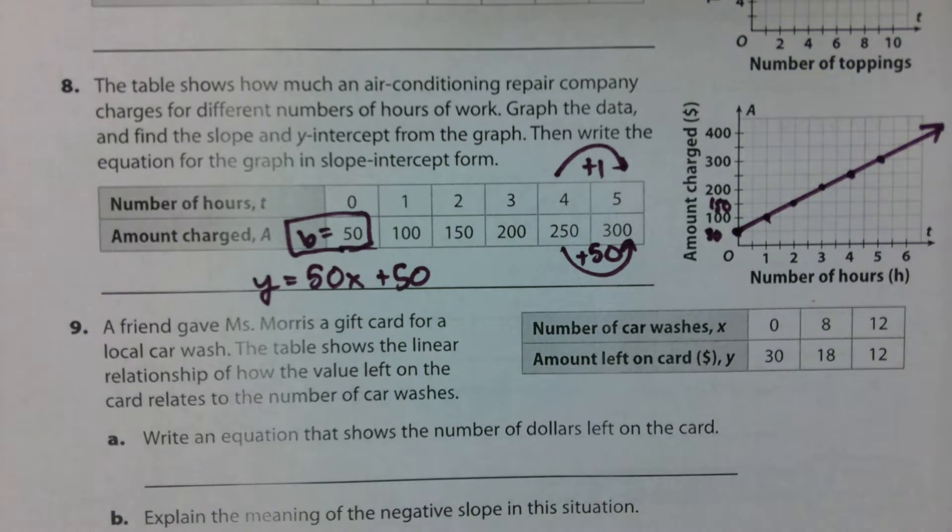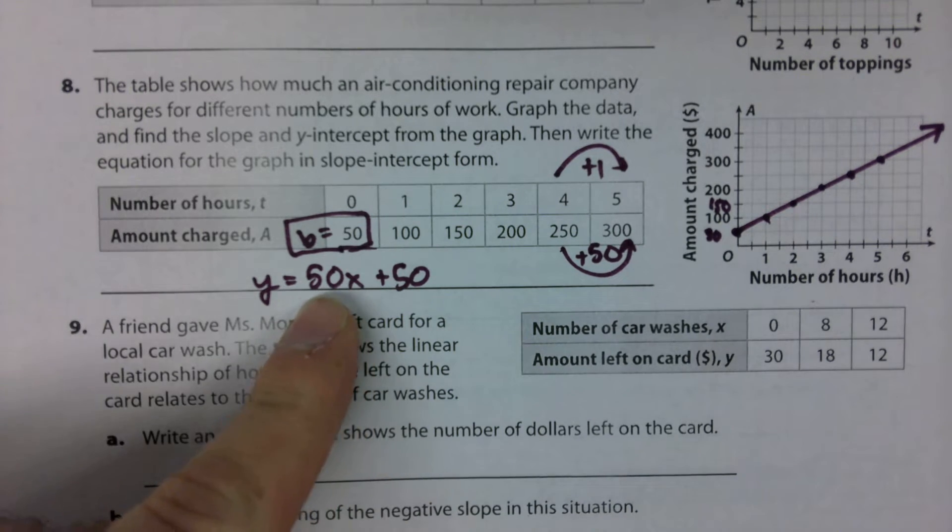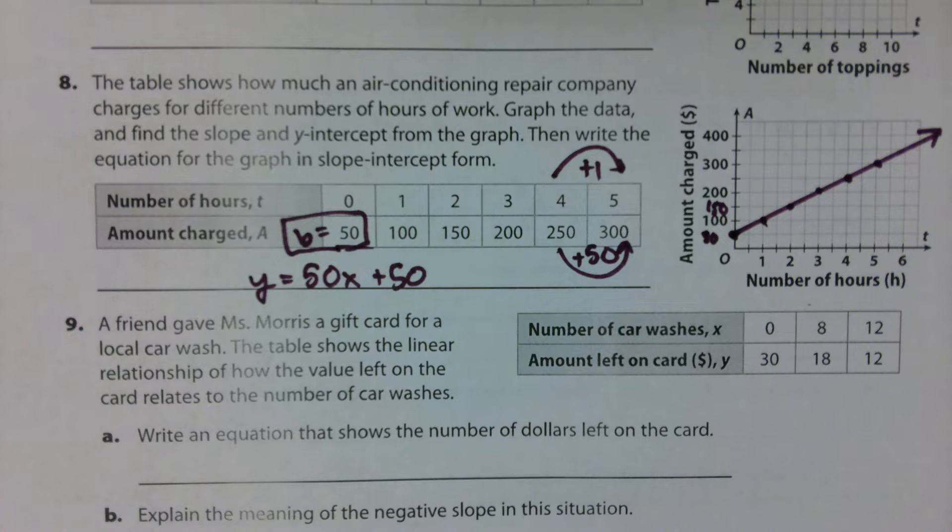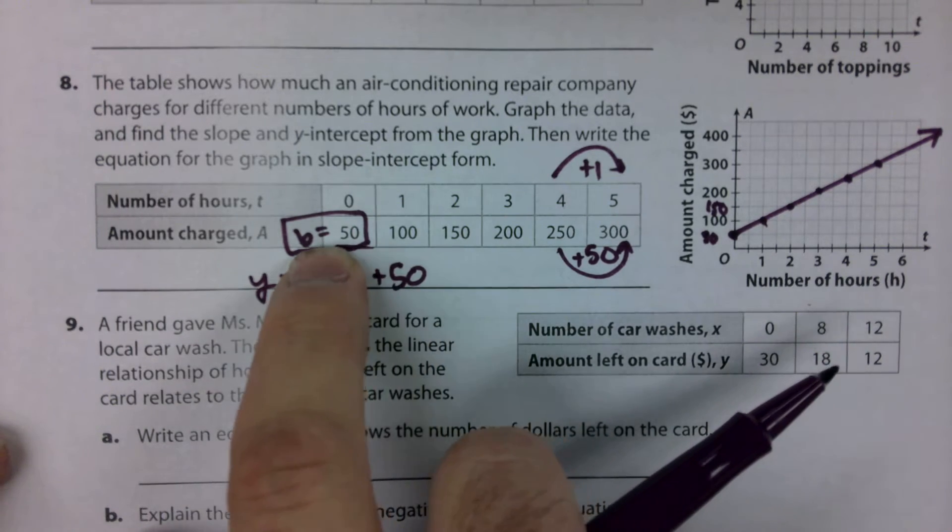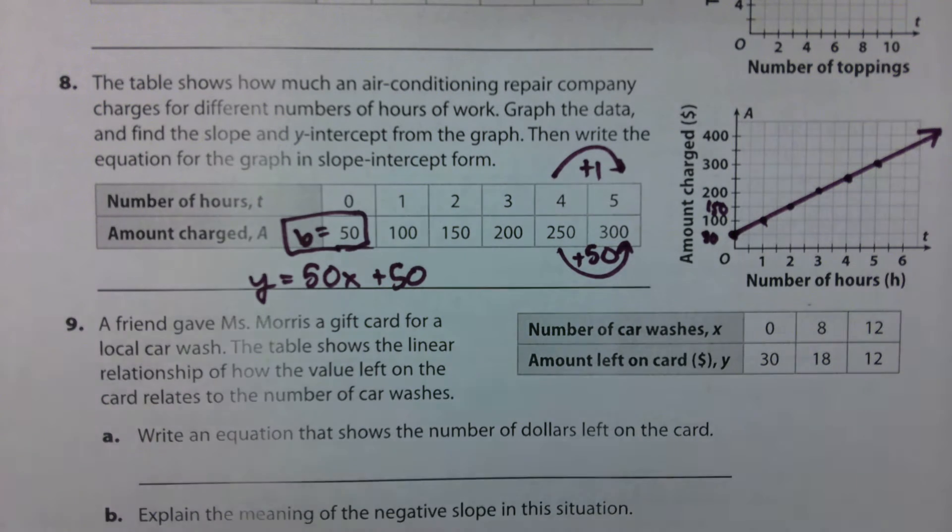y equals 50x plus 50. So what does this 50 right here mean? If we had to describe what that 50 means in the context of this problem, what could you say? For every one hour they worked, they earned $50. That's what our unit rate says in the context of this problem.